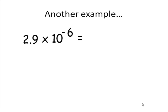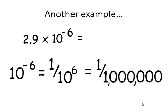Let's take a look at 2.9 times 10 to the negative 6th. You already know that 10 to the negative 6th is 1 over 10 to the sixth, which is 1 millionth.